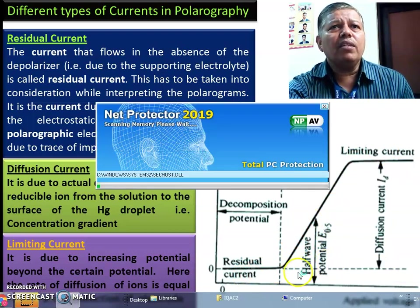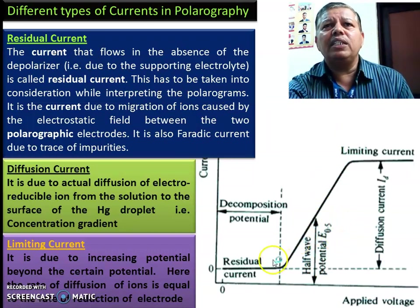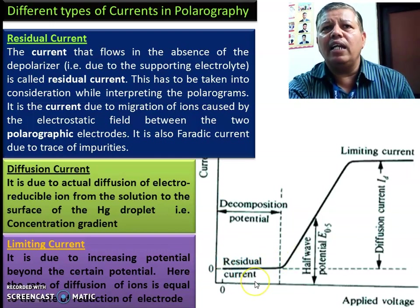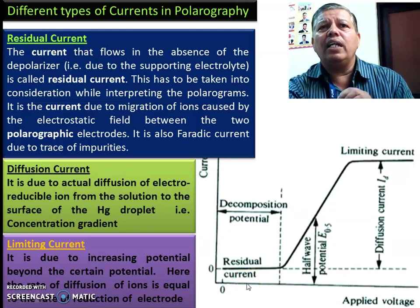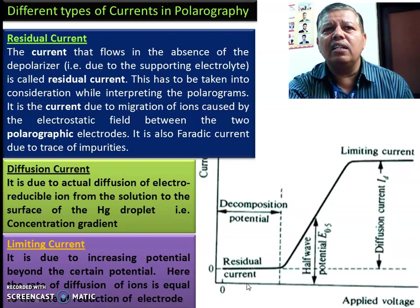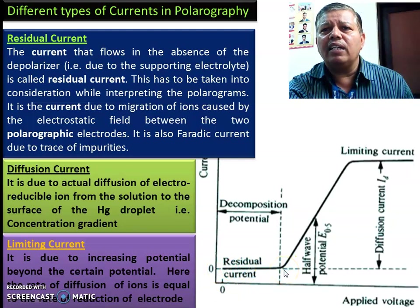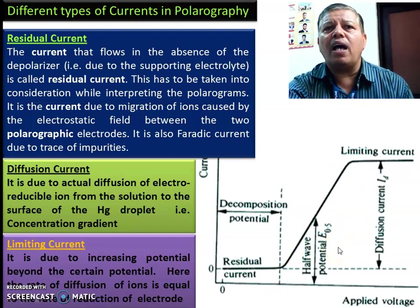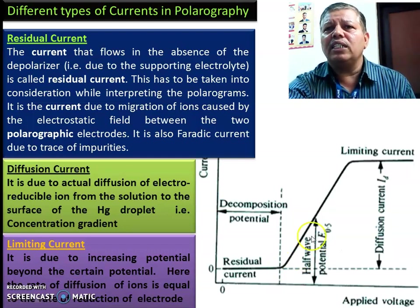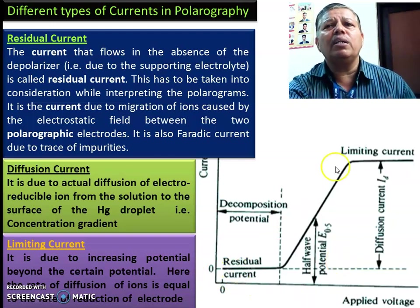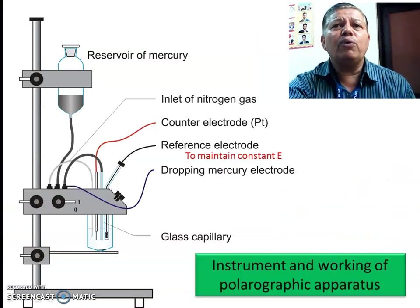The graph is classified in terms of residual current, diffusion current, and limiting current. Residual current flows in the absence of the depolarizer due to the supporting electrolyte; it must be taken into consideration while interpreting the polarogram. It is a current due to migration of ions caused by the electrostatic field between the two electrodes, and also a Faradaic current due to trace impurities. When voltage increases, there is an increase in current due to actual diffusion of the electroreducible ion from solution to the surface of the mercury droplet — that is the concentration gradient. Limiting current is observed when the rate of diffusion of the ion equals the rate of reduction at the electrode.